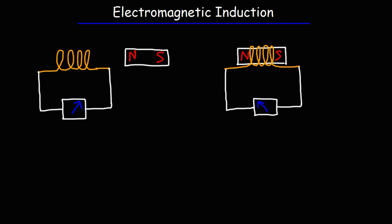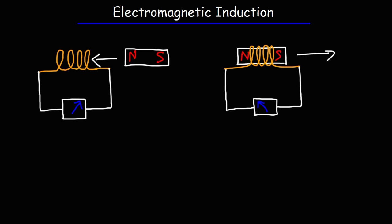We can induce a current in this circuit by simply moving the magnet into the coil. As we move it into the coil, the needle in the ammeter will deflect in one direction. Because this generates an induced current, there's going to be an induced EMF. If we take the magnet out of the coil, the needle will deflect in the other direction, which means the current flowing in the circuit has reversed direction. That's how we can induce a current — that's the basic idea of electromagnetic induction.